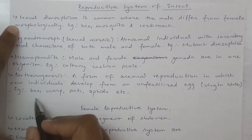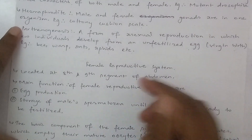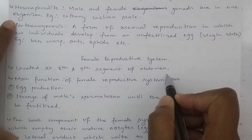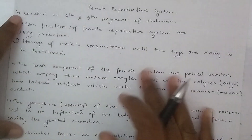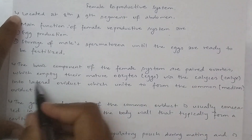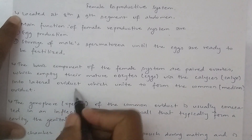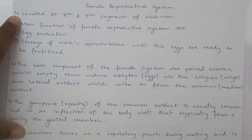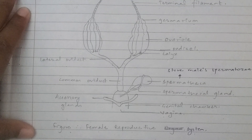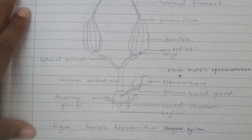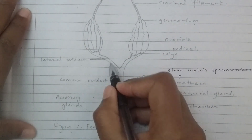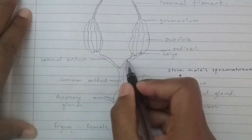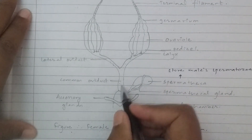In insects, the female reproductive system is found through the 9th segment of the abdomen. The main function of the female reproductive system is egg production and storing male spermatozoa until the eggs are ready to be fertilized. The basic components are a pair of ovaries, which release mature oocytes via the calyx into the lateral oviducts, which unite to form the common oviduct or median oviduct.